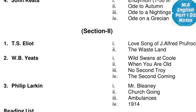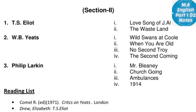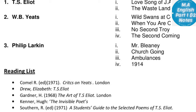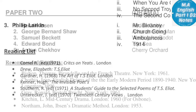W.B. Yeats: Wild Swans at Coole, When You Are Old, No Second Troy, The Second Coming — Yeats' poems are included. Third poet in Section Two is Philip Larkin: Mr. Bleaney, Church Going, Ambulances, 1914. Lectures on Philip Larkin have already been uploaded — you can watch and listen to them. The reading list at the end covers all the poetry you can prepare from.